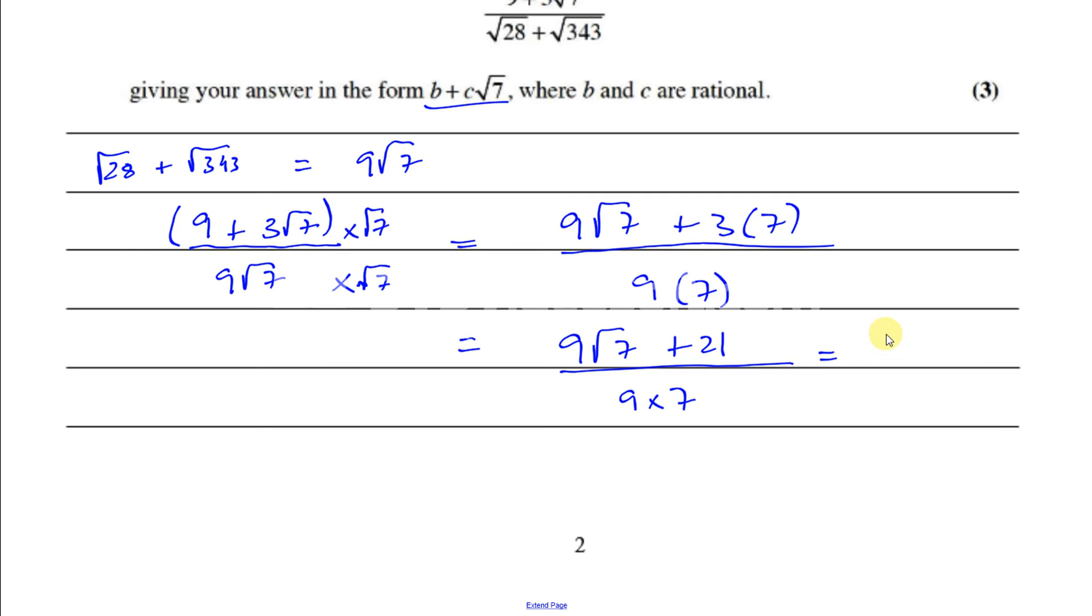So you end up with 9 root 7 plus 21 over 9 times 7. I'm going to leave it as 9 times 7 because we have to split it up into two separate fractions. So I can write this as 9 root 7 over 9 times 7, in which case the 9s will cancel out, plus 3 over 9 which is 1 third. So to write it in the form they want, they want the rational term first, so 1 third plus 1 seventh of root 7. And there we have the answer in the form required as two separate fractions.